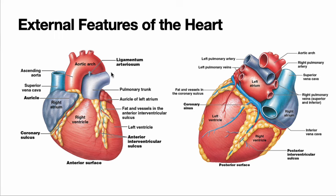And then we have the pulmonary trunk, which is sort of hiding the rest of the pulmonary vessels, which we'll see from the posterior side. You can also see there's a little ligament that attaches these two together — it's called the ligamentum arteriosum, and it just prevents this from moving too much as the heart is beating and blood is moving through.